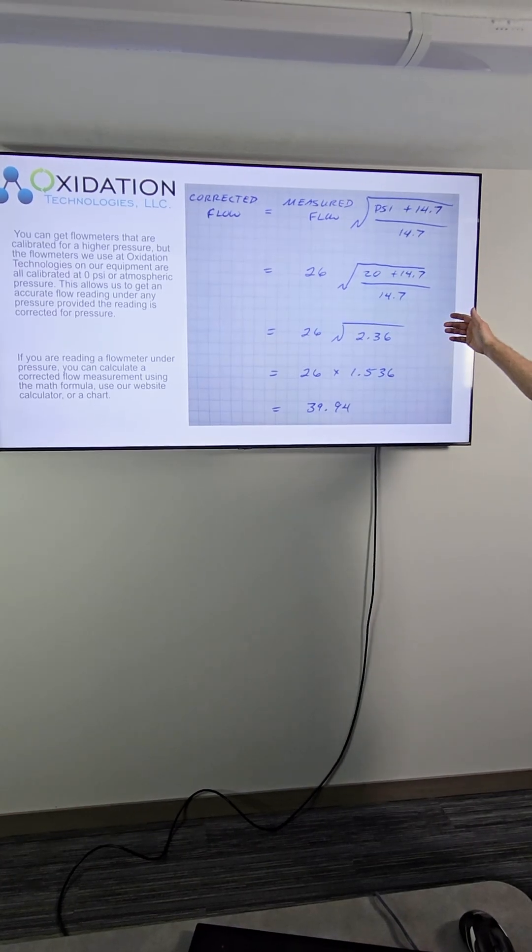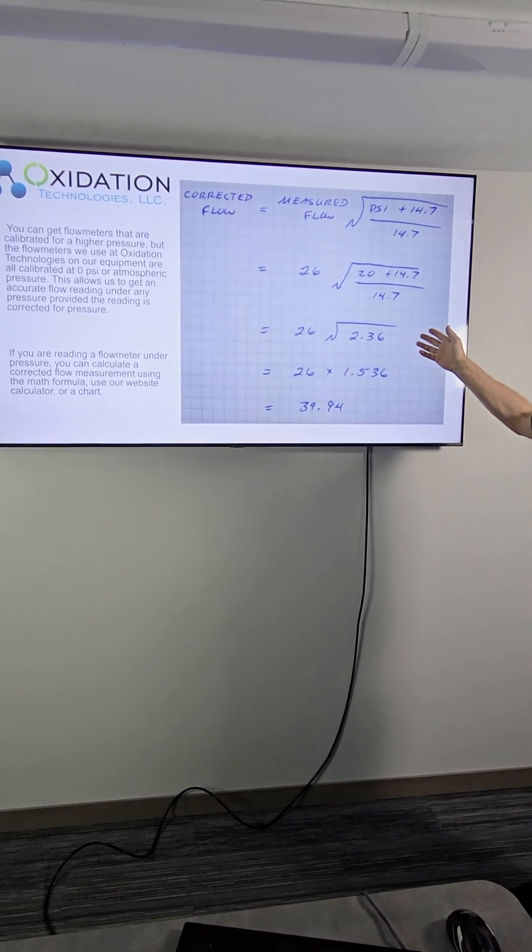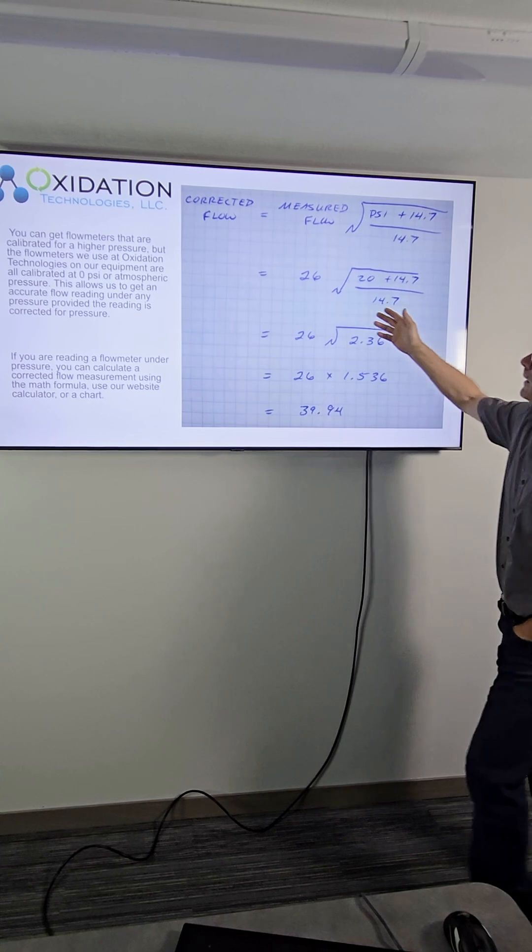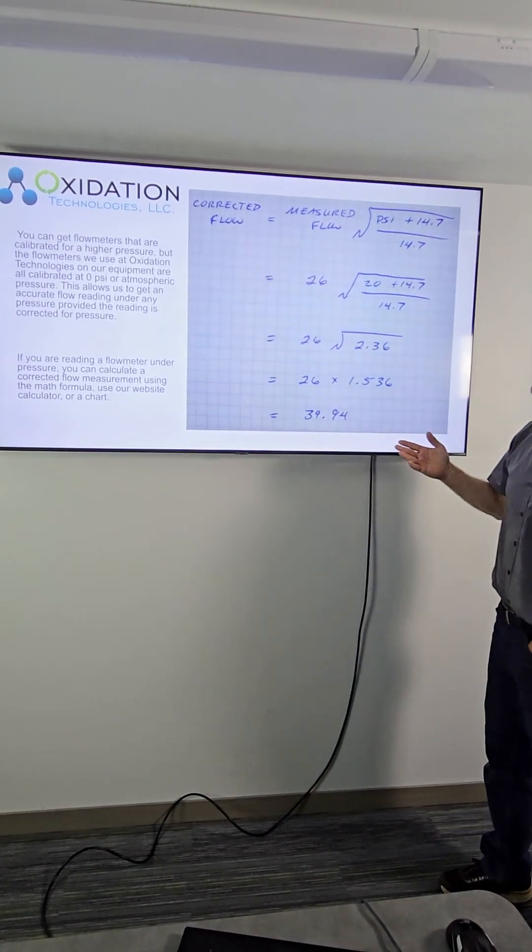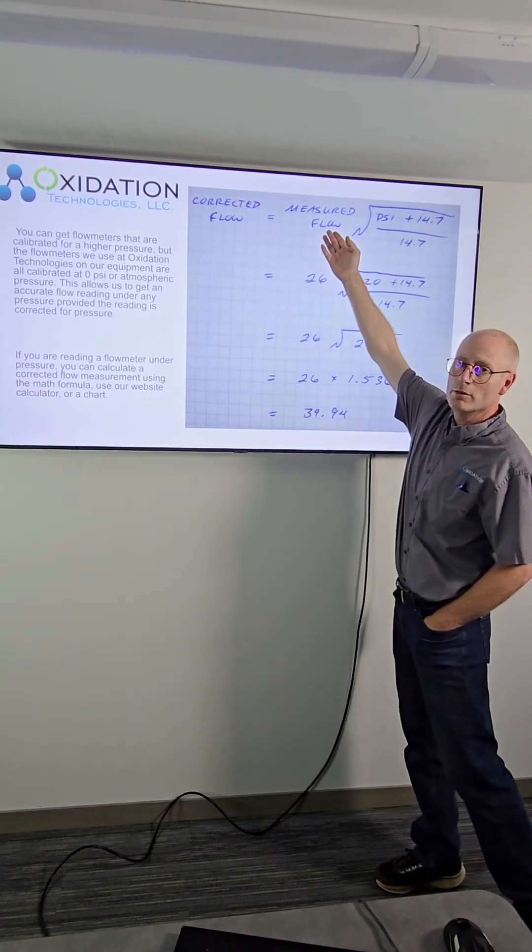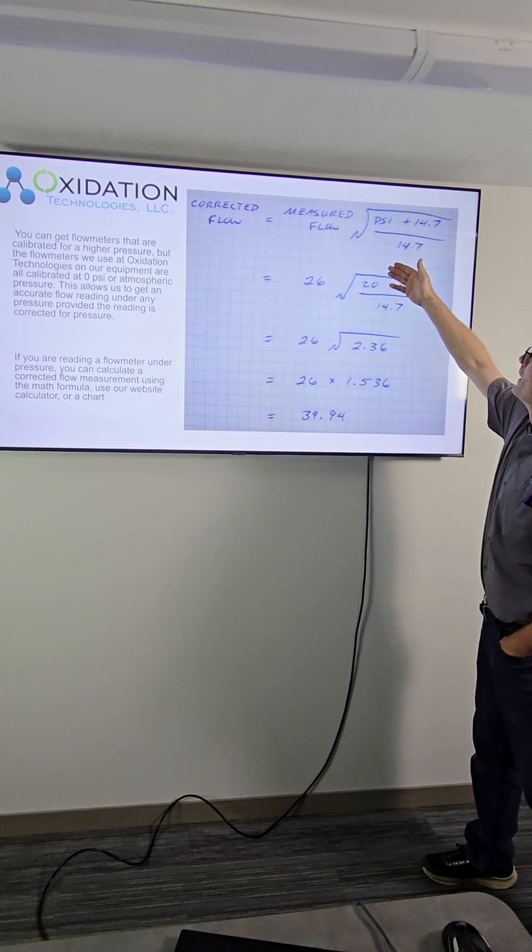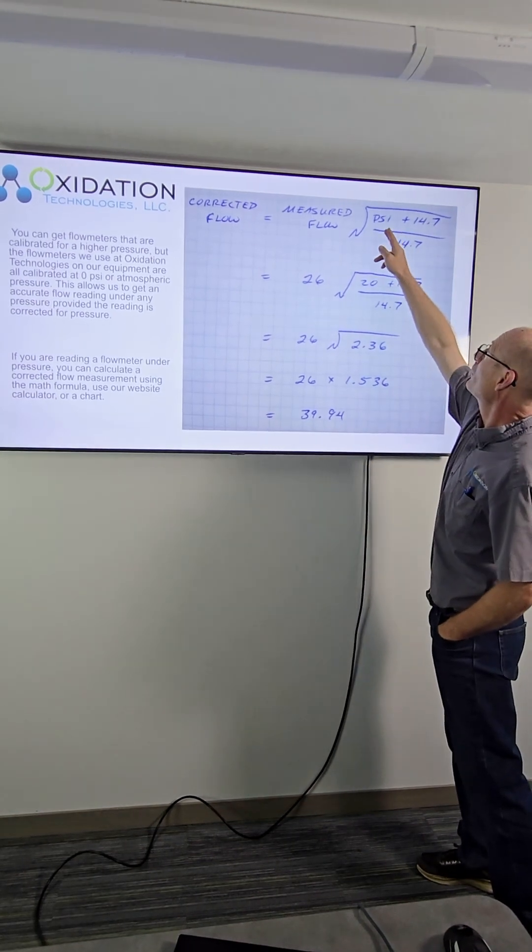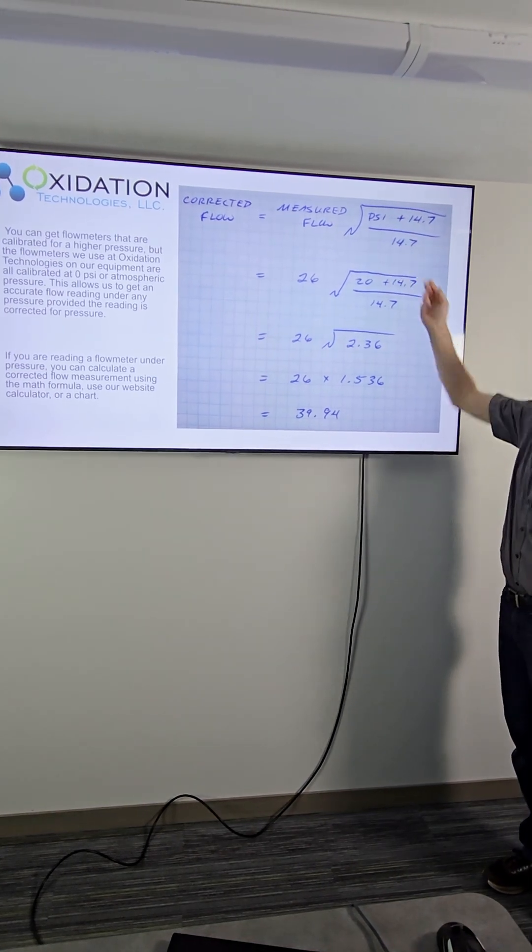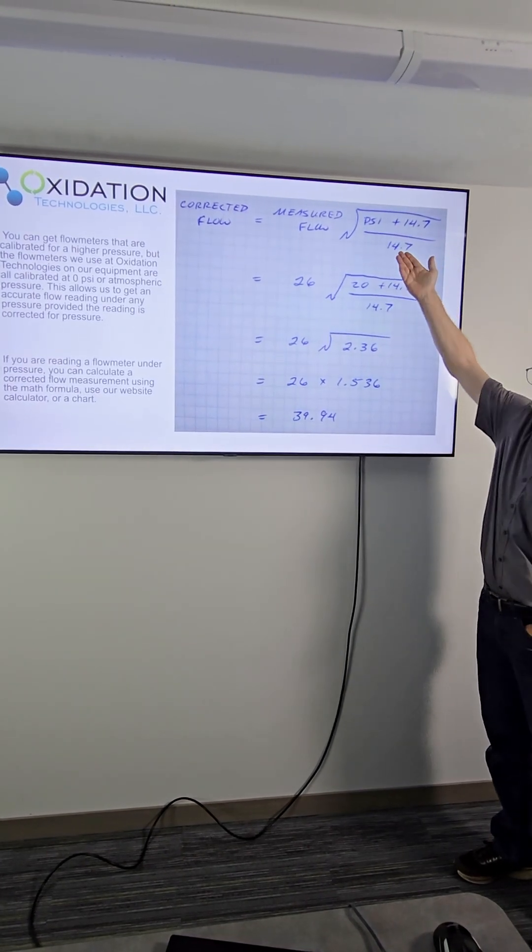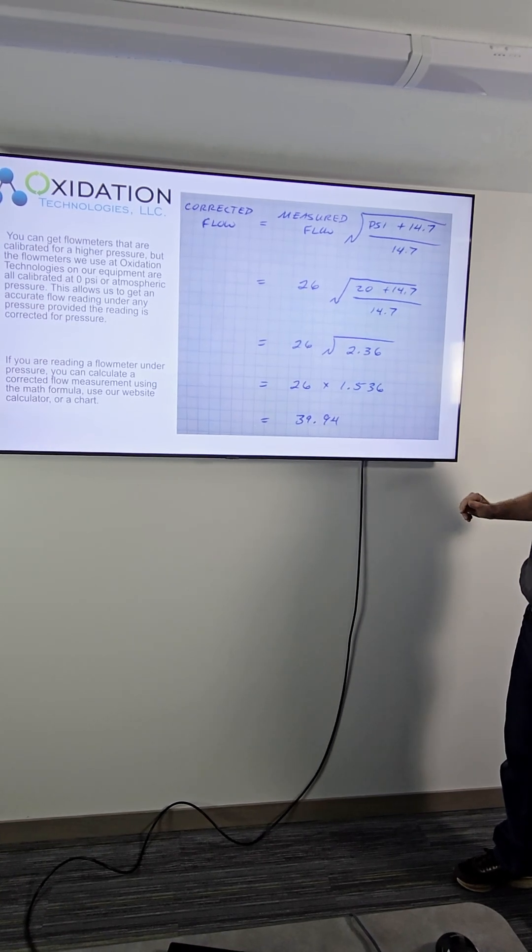So the equation that you use to correct for pressure, you can either do it longhand. There are calculators available as well. But the corrected flow, the actual flow, is going to equal whatever you measure times the square root of the psi plus 14.7 all divided by 14.7. 14.7 is the pressure of one atmosphere of pressure.